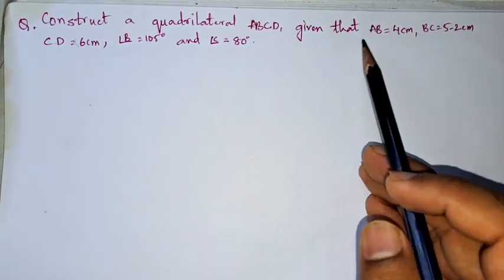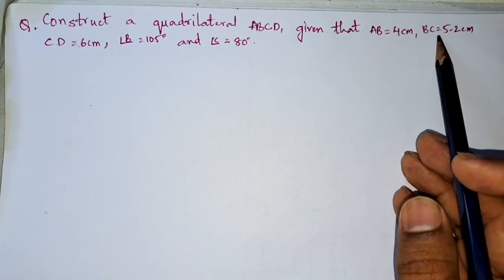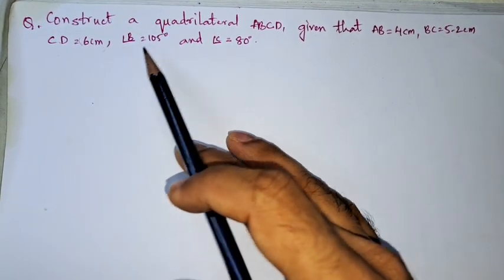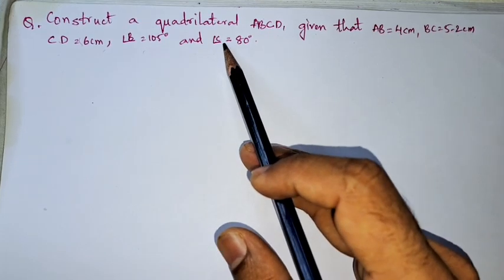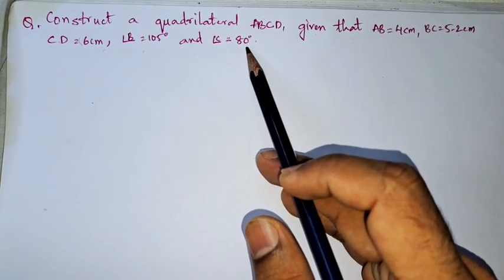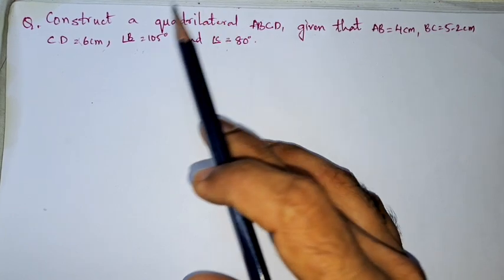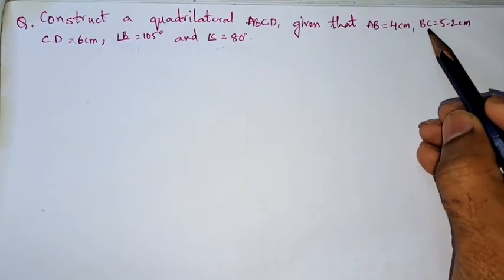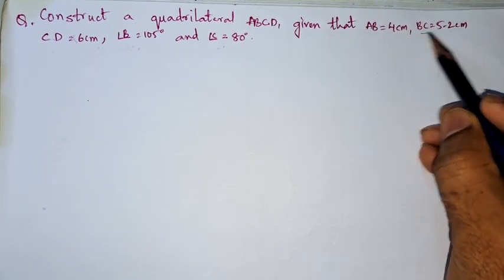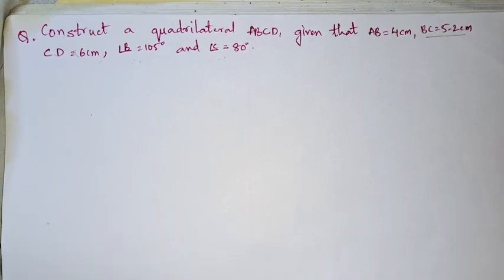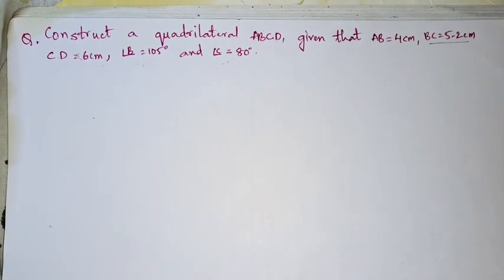Construct a quadrilateral ABCD given that AB equals 4 centimeter, BC equals 5.2 centimeter, CD equals 6 centimeter, angle B equals 105 degrees, and angle C equals 80 degrees. Since we have two angles, angle B and angle C, we will keep the base as BC because we are having BC, angle B, and angle C. Let us start constructing.